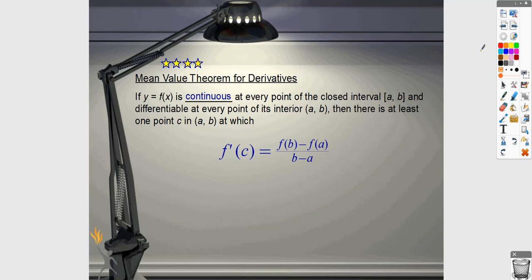So the conditions of the Mean Value Theorem say that the function has to be continuous at every point on the closed interval. So we have to include the endpoints for continuity. It needs to be differentiable at every point on the interior. So it does not need to be differentiable at the endpoints. It can be, but it doesn't have to be.